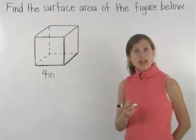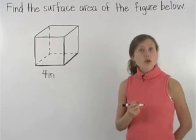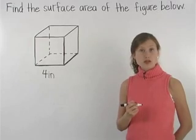So we can simply find the area of one face of a cube and multiply by the number of faces, which is 6.